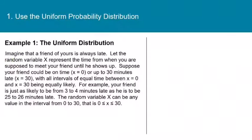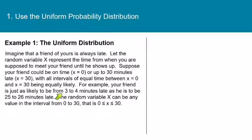This is Example 1 from your textbook. Imagine that a friend of yours is always late. Let the random variable X represent the time from when you are supposed to meet your friend until he shows up. Suppose your friend could be on time (X = 0) or up to 30 minutes late (X = 30), with all intervals of time between X = 0 and X = 30 being equally likely. For example, your friend is just as likely to be 3 to 4 minutes late as 25 to 26 minutes late. X can be any value in the interval 0 ≤ X ≤ 30.